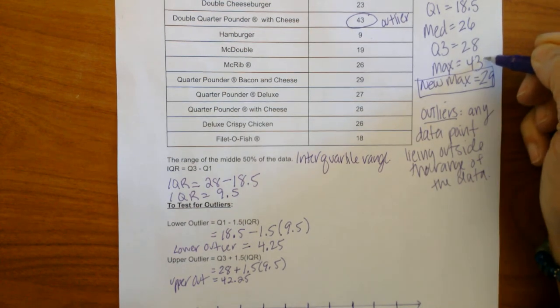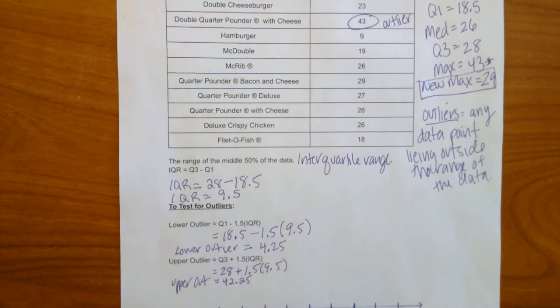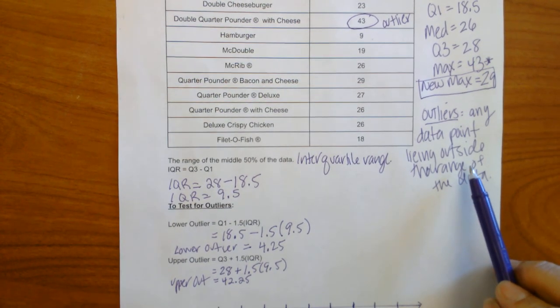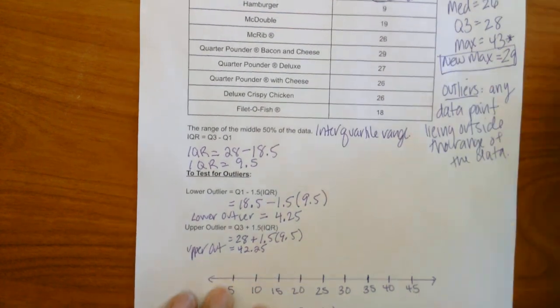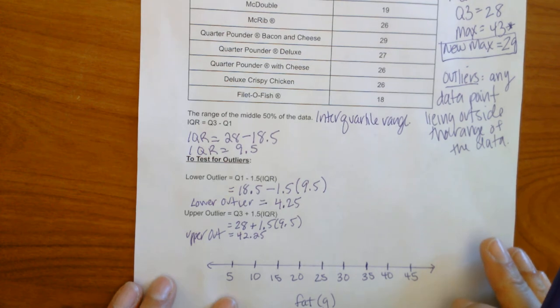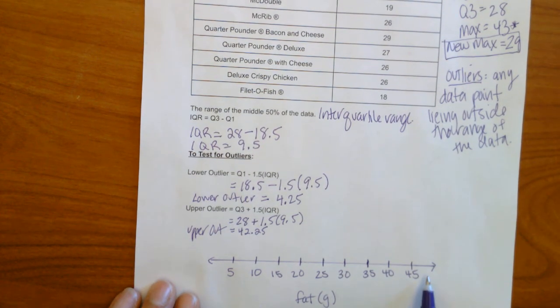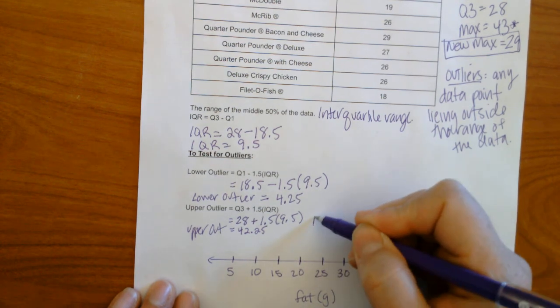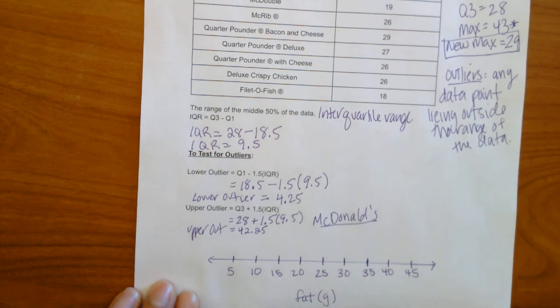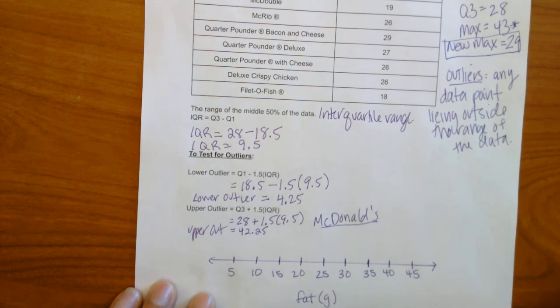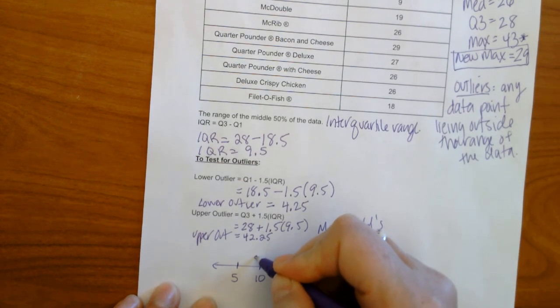We are still going to be graphing this maximum, but it's going to be shown as a point that actually lies outside the data. So let's get to our box and whisker plot down here. So I've set it up. I went by fives. I labeled it fat. Let's label it McDonald's. Little title here. And let's start plotting our points. So first point is going to be 9. That's our minimum. So 9 is going to be here.